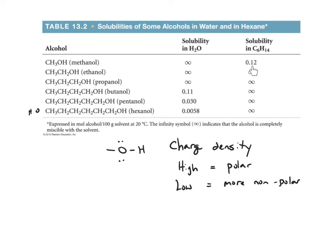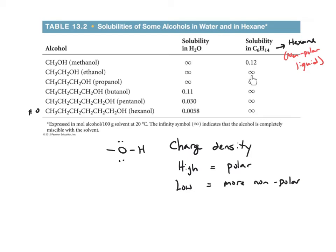The second column of this table shows C6H14, called hexane, which is a nonpolar liquid. Methanol, which is very highly polar, is not very soluble in hexane. But as you increase the carbon chain, the molecule becomes less and less polar. Even adding a second carbon to the chain gives it more nonpolar character, so it can be soluble in something like hexane.